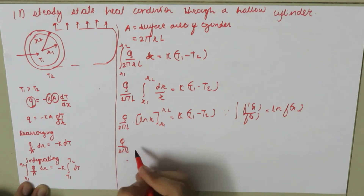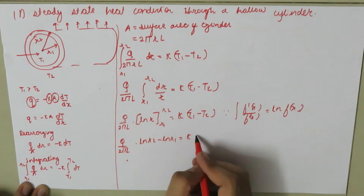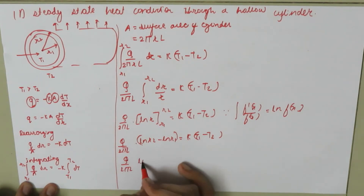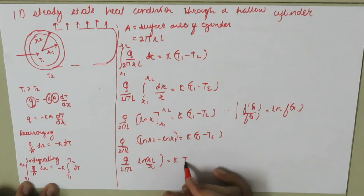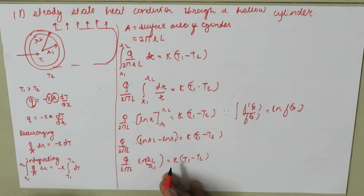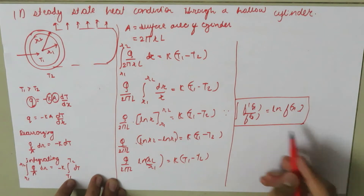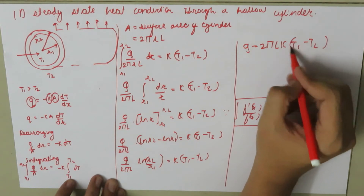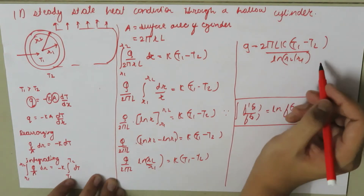This gives Q/(2πL) times (ln R2 minus ln R1) equals K(T1 minus T2), which simplifies to Q/(2πL) times ln(R2/R1) equals K(T1 minus T2). Therefore, the final heat transfer equation is Q equals 2πLK(T1 minus T2) divided by ln(R2/R1).